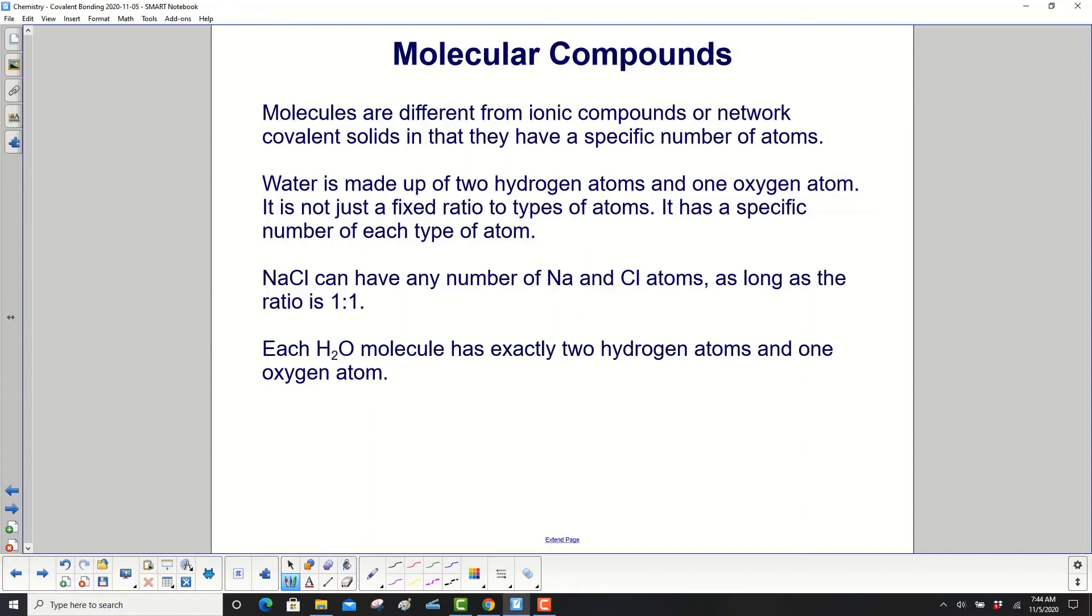Molecules are different from ionic compounds or network covalent solids in that they have a specific number of atoms. Water is made up of two hydrogen atoms and one oxygen atom. It is not just a fixed ratio to types of atoms. It has a specific number of each atom. Sodium chloride can have any number of sodium and chlorine atoms as long as the ratio is 1 to 1.